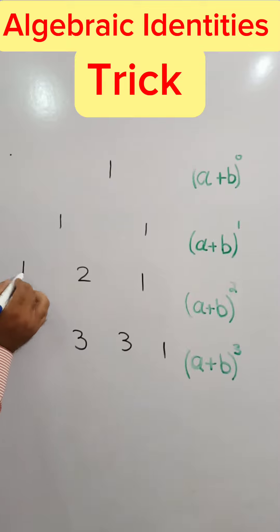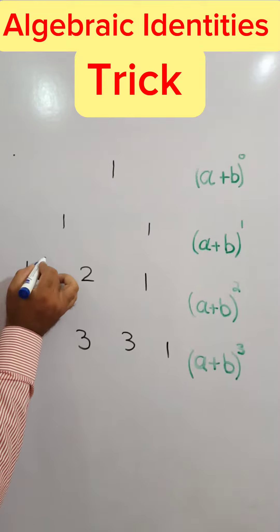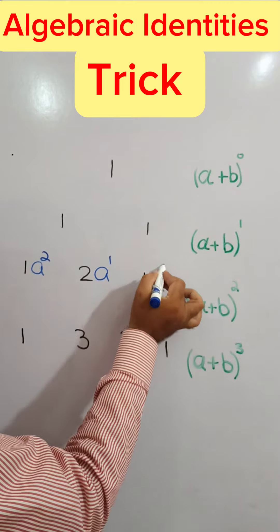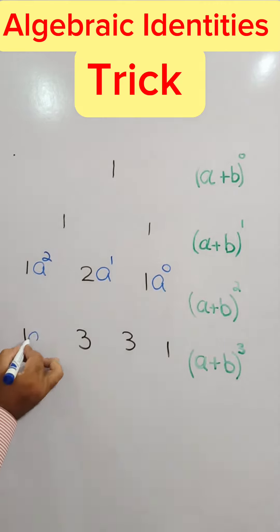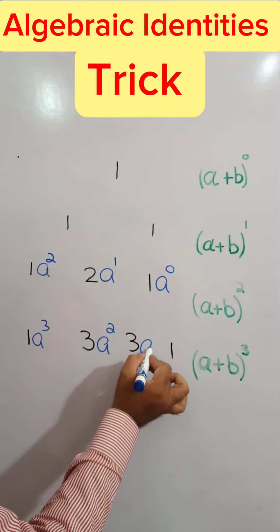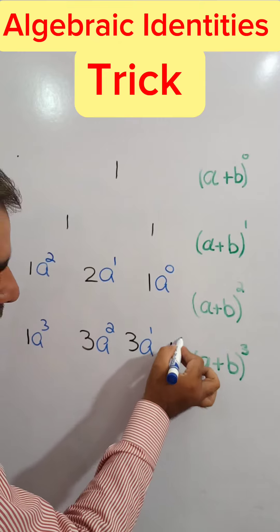Here start for the a. a. 2. Reduce the power. 1. 0. a power 3. a square. a1. a0.